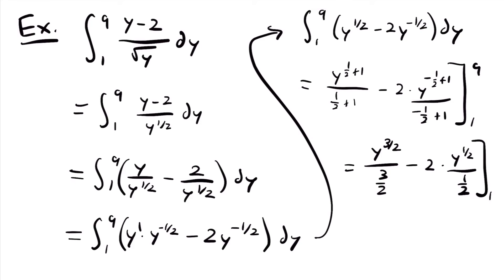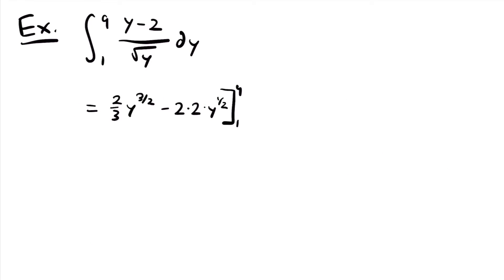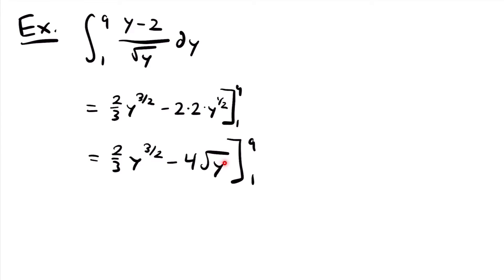Dividing by a fraction is the same as multiplying by its reciprocal. So we can rewrite this as two thirds times y to the three halves power, minus 2 times 2 — the reciprocal of one half — times y to the one half power, evaluated from 1 to 9. Cleaning up, this equals two thirds times y to the three halves power minus 4 times the square root of y, evaluated from 1 to 9. I multiplied the twos together to get 4 and rewrote y to the one half power as the square root of y.